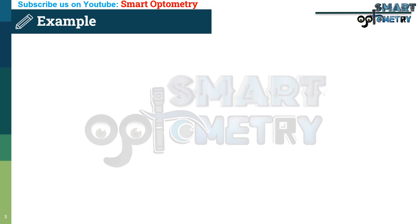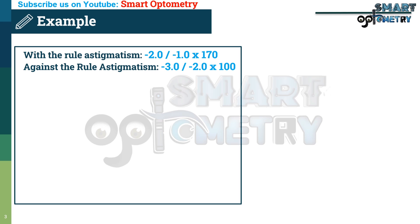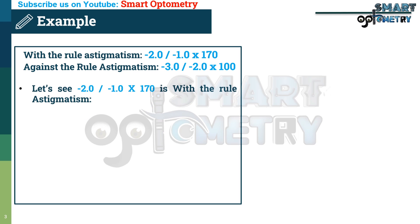Let's understand with the rule and against the rule astigmatism with examples. With the rule astigmatism example: minus 2, minus 1, 170 degree axis. Against the rule astigmatism example: minus 3, minus 2, 100 degree axis. Let's see how minus 2, minus 1, 170 degree axis is with the rule astigmatism.